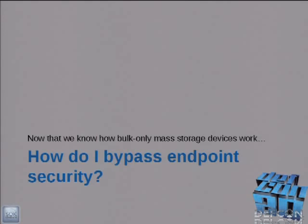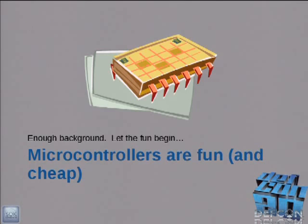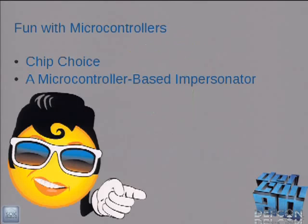Enough background stuff — let's talk about the good stuff. How do I bypass this security? Essentially what we're doing is impersonation, or social engineering USB-style. If we know what an authorized VID/PID is, we can use that fact to mount the device and then inject some code, or get some stuff off the device. The device I designed also optionally allows you to do write blocking. We'll use some microcontrollers because they're fun and they're cheap.